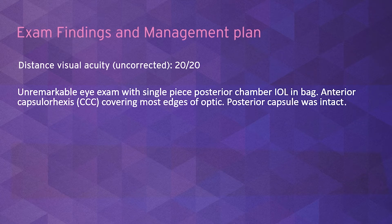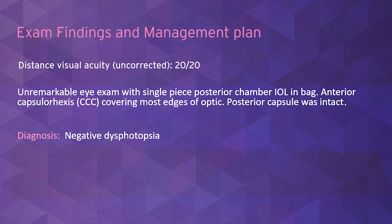Based on the patient's symptom of noticing a crescentic shadow on the outer corner of his right eye, and based on the fact that the anterior capsular rhexis margin overlapped the optic of the intraocular lens, our impression was that the patient had negative dysphotopsia. Since the patient was definitive about his frustration with his current visual situation and wanted a solution, we offered surgical correction.